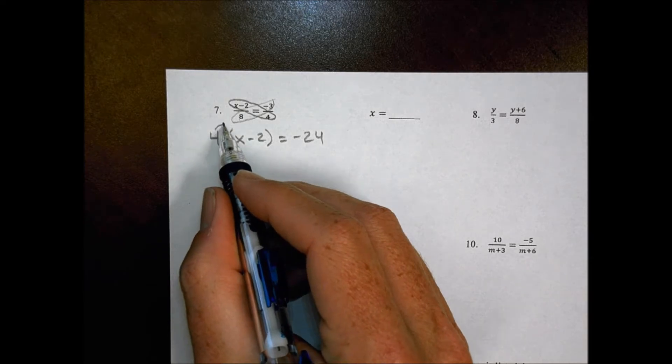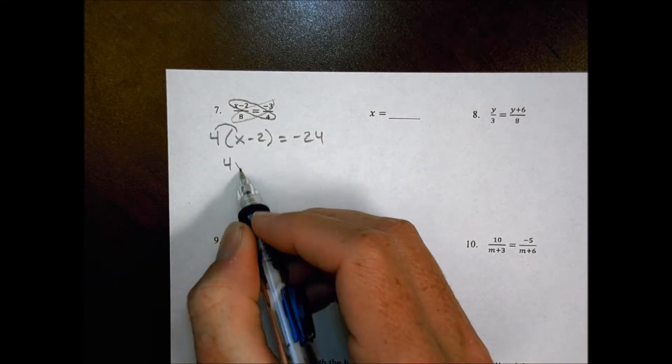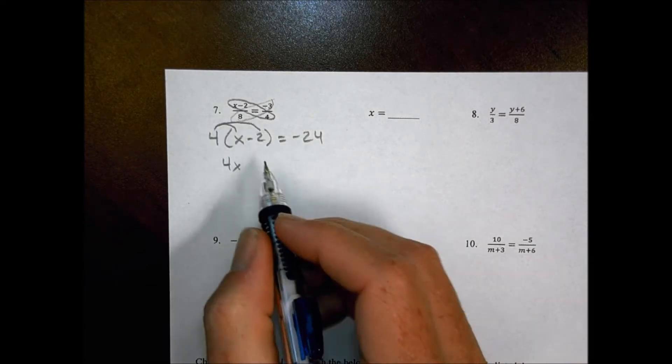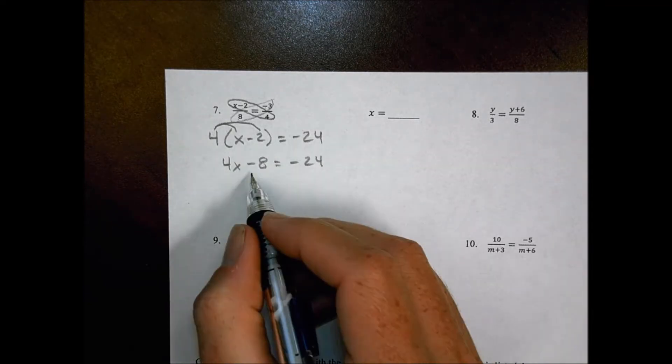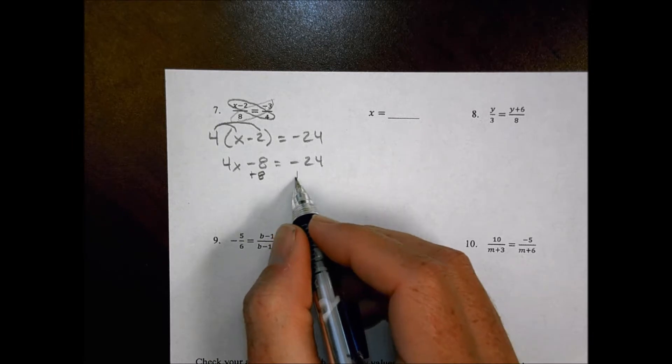Now I'm going to use distributed property to do 4 times x is 4x, and then 4 times minus 2 is minus 8, and make that equal to still negative 24. Let's move the integers to this side over here.